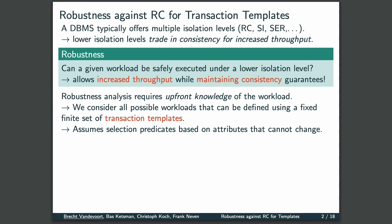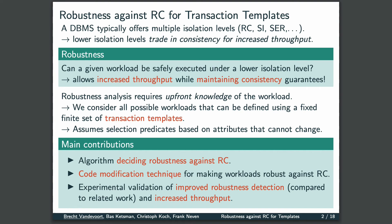Without giving up consistency guarantees. Robustness analysis requires upfront knowledge of the workload at hand, and we therefore consider all possible workloads that can be defined using a fixed, finite set of transaction templates, which I will discuss in more detail later on. One important assumption for this model is that selection predicates are based on attributes that cannot change. The main contributions of our work are as follows: we provide an algorithm that, given a set of transaction templates, decides robustness against Read Committed.